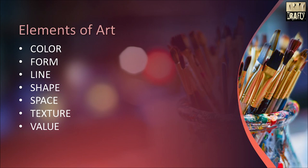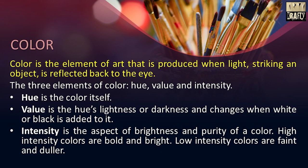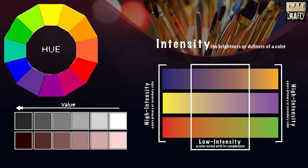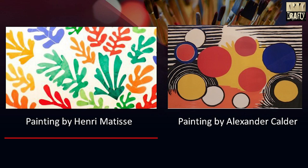The first one is color. Color is the element of art that is produced when light striking an object is reflected back to the eye. There are three elements of color: hue, value and intensity. Hue is the color itself, value is the lightness or darkness, and intensity is the brightness and purity of a color. High-intensity color refers to bold and bright, while low-intensity colors are faint and duller. Here are the examples of hue, intensity and value. This is the painting done by Henry Matisse and Alexander Calder.